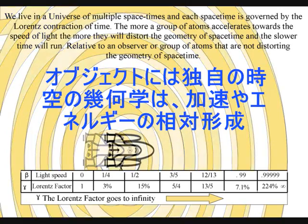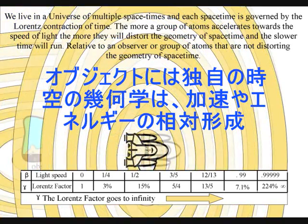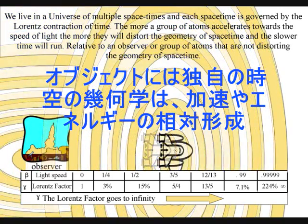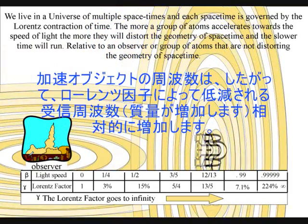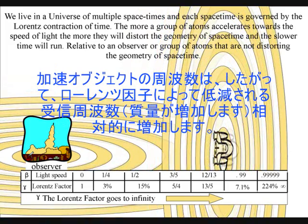We have time dilation for an object accelerating towards the speed of light, and gravitational time dilation around objects of great mass, because the greater the momentum, the shorter the wavelength, and the higher the frequency.